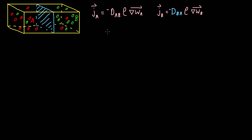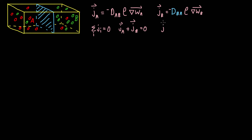Now if we assume that this is a stationary medium, then we know that for stationary mediums the sum of all the fluxes of species i is zero. So in our case, the flux of species A plus the flux of species B is equal to zero, or in other words, the flux of species A is equal to the negative flux of species B.